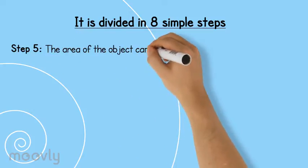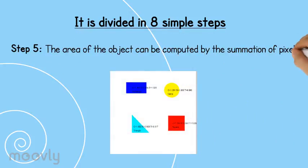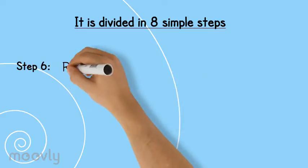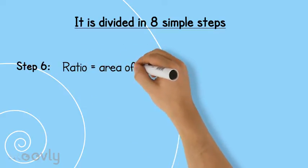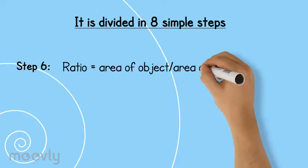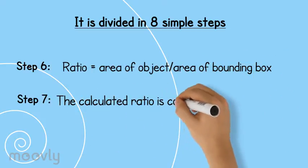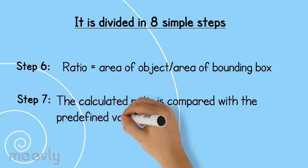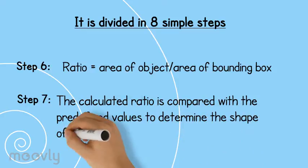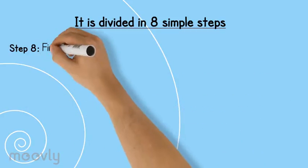Step 5. The area of the object can be computed by the summation of pixels. Step 6. The ratio equals to the area of object divided by the area of bounding box. Step 7. The calculated ratio is compared with the predefined values to determine the shape of the given object.